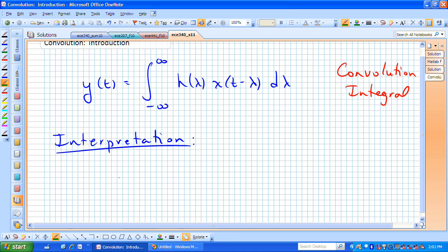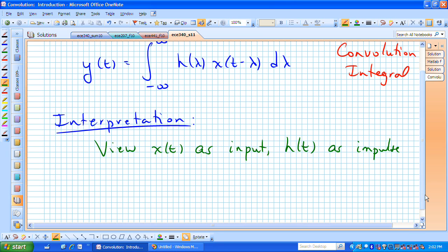What I want to do is view x of t as an input. We'll view h of t as an impulse response from a linear time invariant system. So h of t is an impulse response of a linear time invariant system. And y of t is the resulting output of this system.